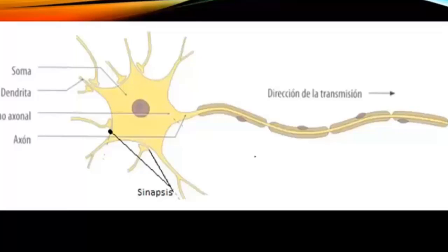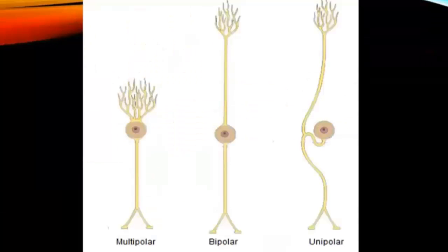According to their prolongations, the neurons can be unipolar, bipolar, or multipolar. In the human body, most of the neurons are multipolar. There are also unipolar neurons, like in the ganglion, or bipolar neurons, like in the retina.